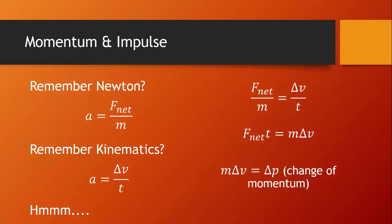If an object changes velocity, it will have more or less momentum than it used to have. And f net t is defined as impulse. That's right, capital J is impulse. Why? Nobody knows.